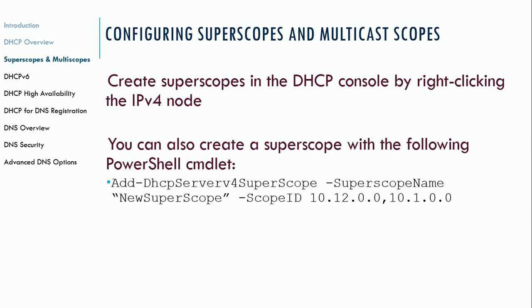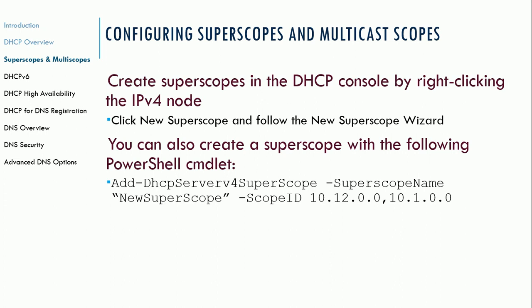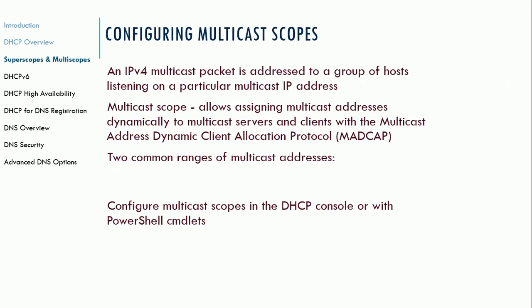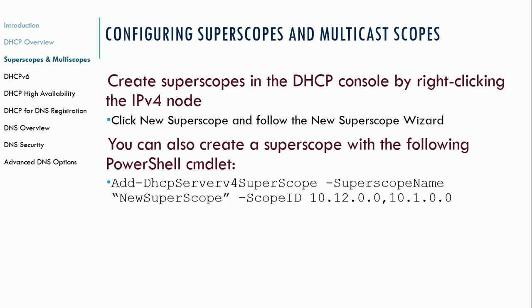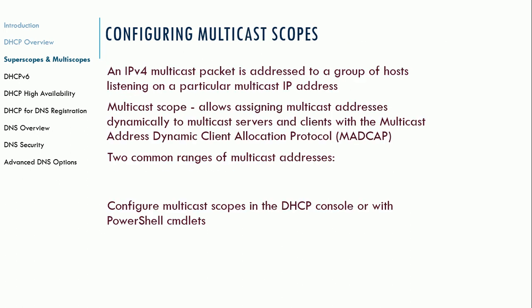You can certainly use Superscopes if you think it's going to work for you. You can create Superscopes in the DHCP console by right-clicking the IPv4 node, clicking New Superscope, and then following the wizard to create your new scope. You could also do it with a PowerShell commandlet, as you can see here in that slide.